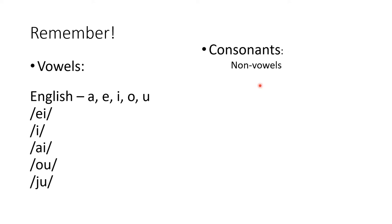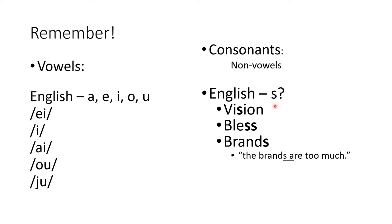The consonants are everything that are not vowels. We're going to look at a certain consonant: S. In orthography this is the S in English. Now, is this always pronounced as S? We can look at the word 'vision' — this gives us our first hint that it's not always pronounced as S. We don't say 'vissen'; we say 'vision' — that's a different sound. And here we've got 'bless,' which is what we would think this letter represents: the S sound.